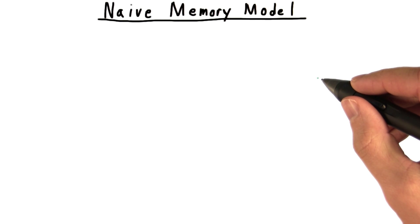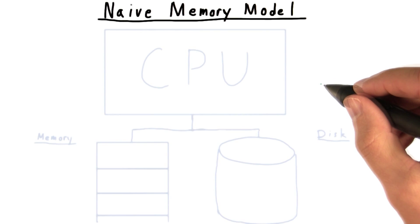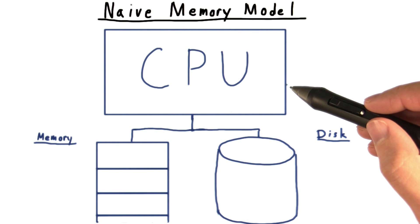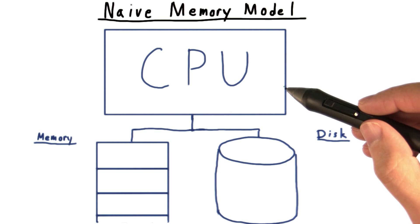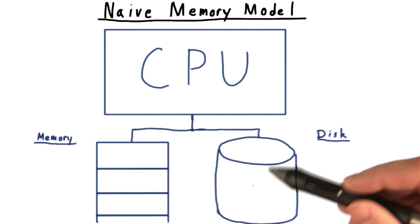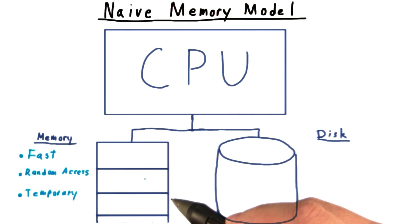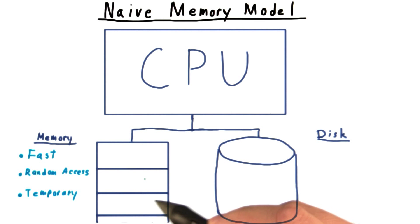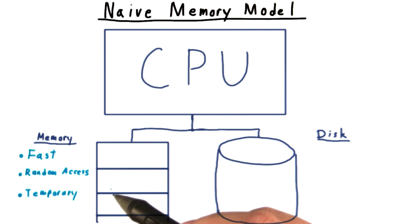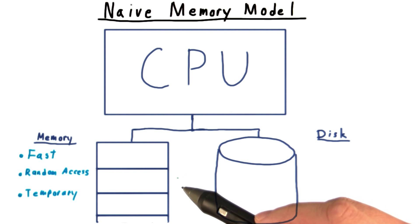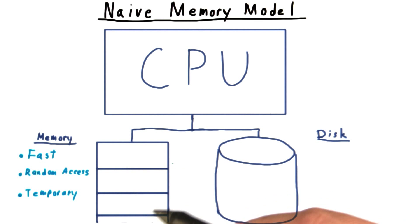In your first programming class, computer memory may have been explained to you with a picture that looks something like this. We have the CPU, where your instructions get executed. These instructions may read or write to either main memory or to disk. Main memory is fast, and you can access any element in the same amount of time — that's what we mean by random access. And it is temporary in the sense that when the program exits or if power is lost, all the information stored in it disappears.